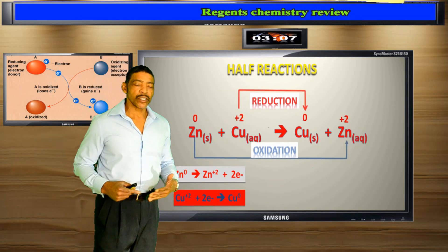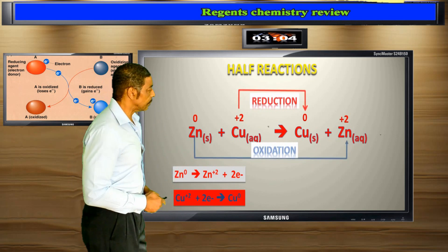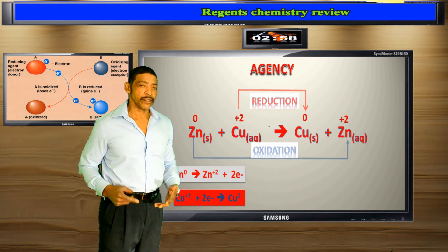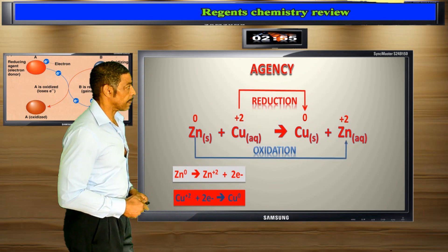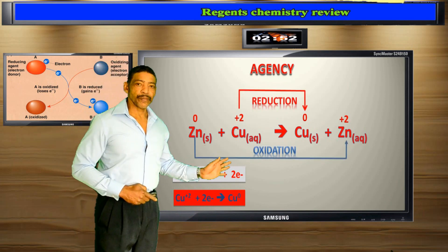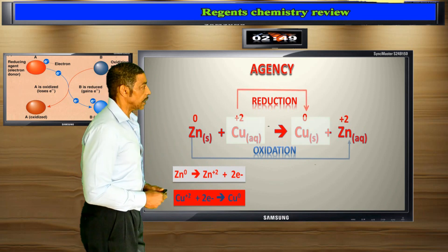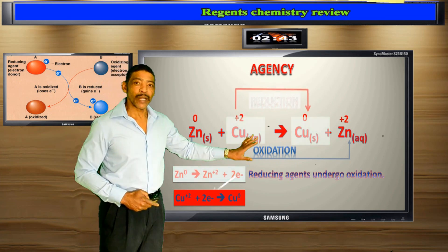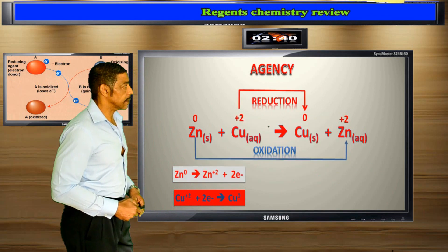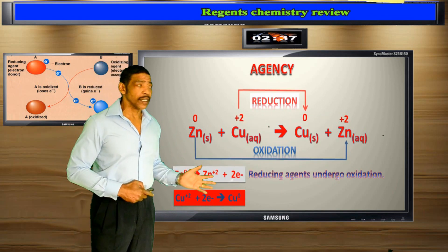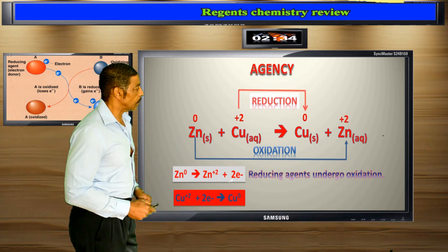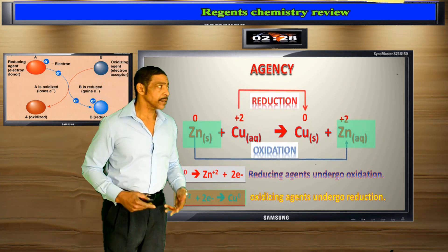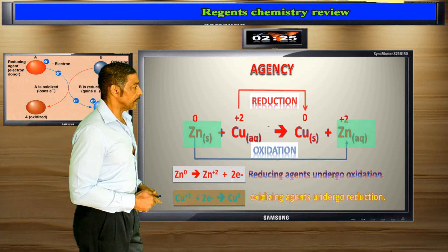These processes must occur simultaneously and will facilitate each other. The facilitation of one process by another is called agency. The oxidation of zinc metal will cause the copper 2 ion to be reduced, so zinc metal represents what is called a reducing agent. The reduction of aqueous copper 2 cation will allow the zinc metal to undergo oxidation, so the aqueous copper 2 cation represents the oxidizing agent.